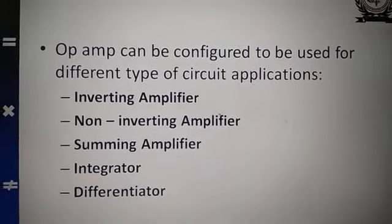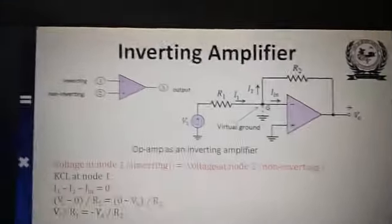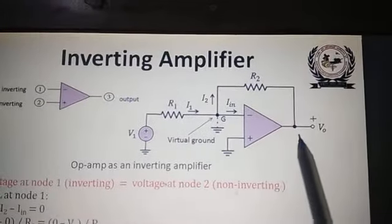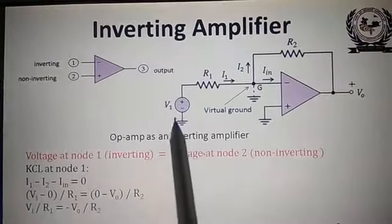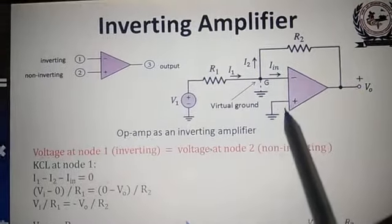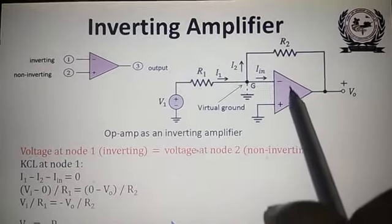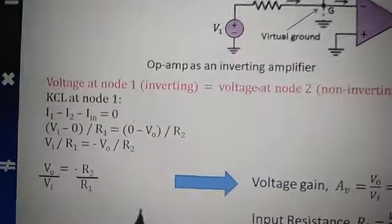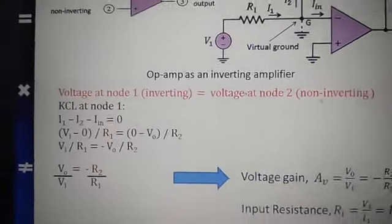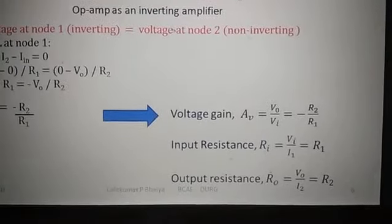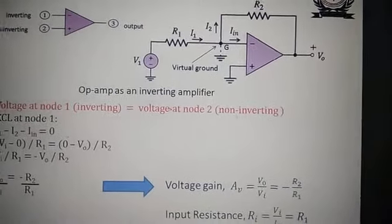For the inverting amplifier, the feedback resistance R2 is connected to the inverting terminal, and R1 is the input resistance. Input V1 is applied to the inverting terminal and non-inverting is grounded. This point is called as virtual ground, due to infinite input impedance and infinite open loop gain. The gain of the inverting amplifier V0/V1 is equal to minus R2/R1 or minus RF/R1. Input resistance is nearly equal to R1 and output resistance is nearly equal to R2.